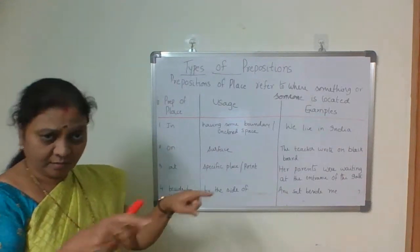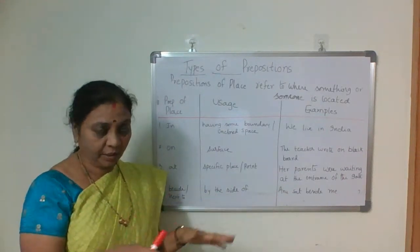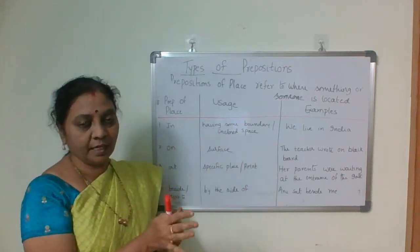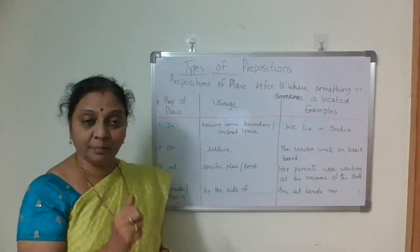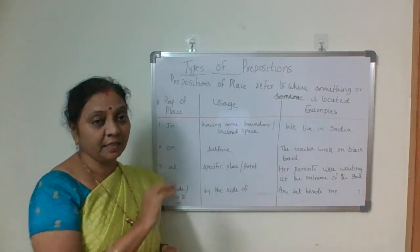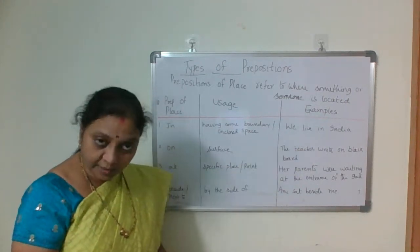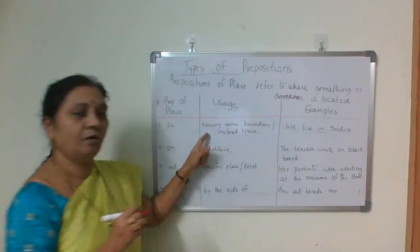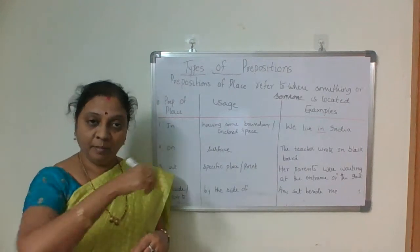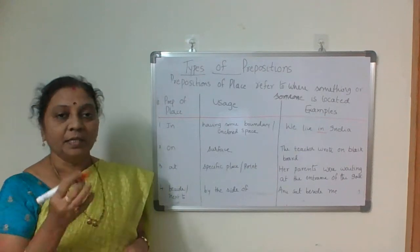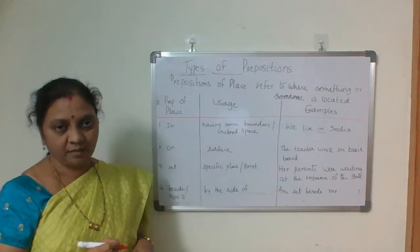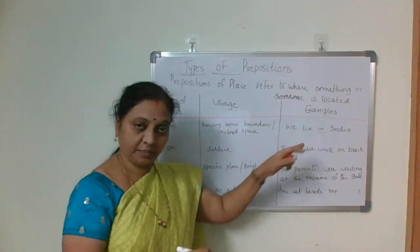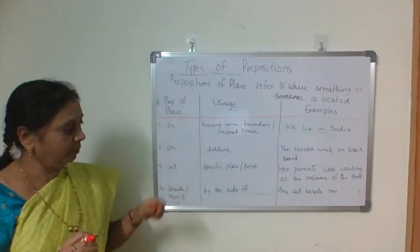'In' means some boundary, some enclosed area. For example: 'The book is in the bag.' 'We live in India.' — some enclosed space which has some boundary. 'The pen is in the box' — enclosed space. We live in India — that's 'in'.